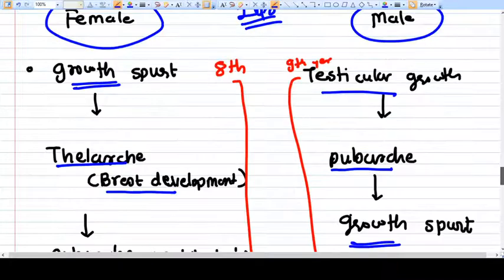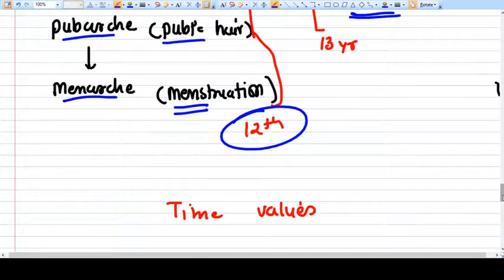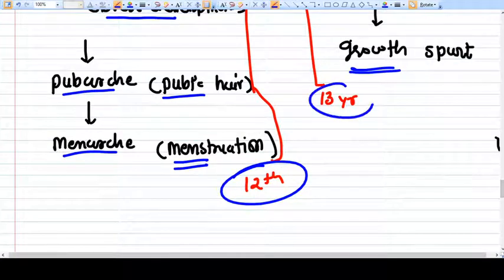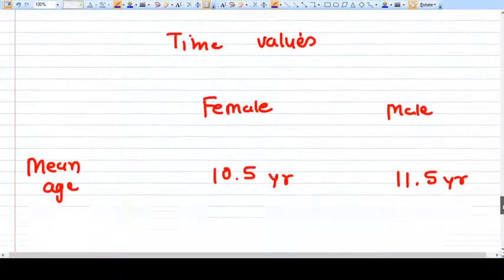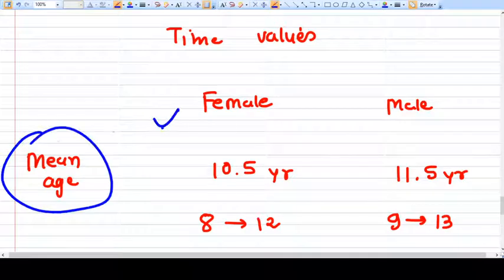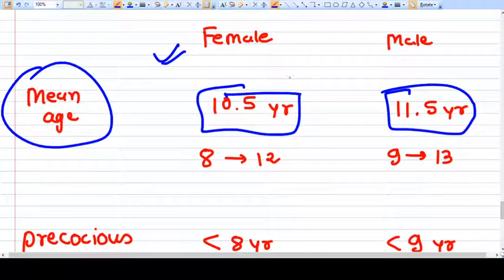The puberty timeline in females starts from the eighth year to 12 years, while in males it starts from the ninth year to 13 years. The mean age of puberty in females is 10.5 years and in males is 11.5 years. So females are one year ahead.